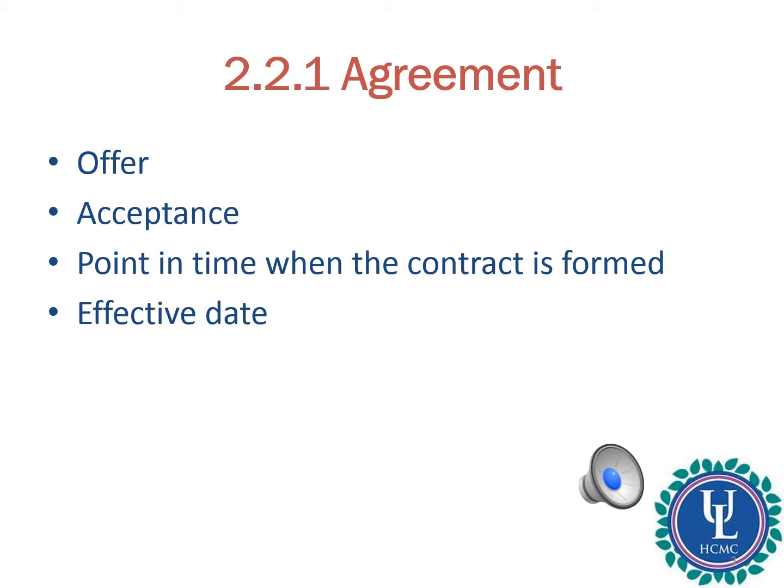In this part, we will look at four specific issues. First, we look at the definitions of offer, the conditions for the offer to be valid, and the rules governing offer. Second, we will look at acceptance — what acceptance means and the rules governing it, including when acceptance takes effect and counter-offers. Third, we will look at the point in time when the contract is formed. Fourth, we will look at the effective date of a contract and the rules governing it.